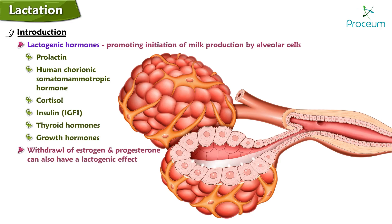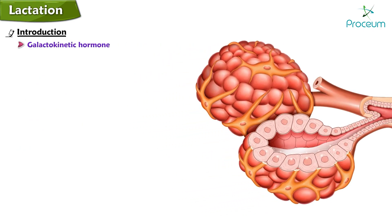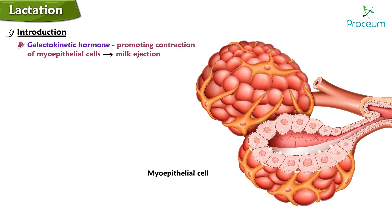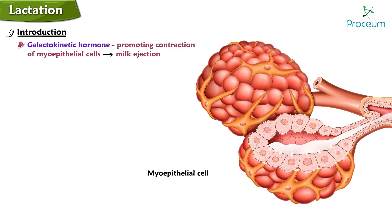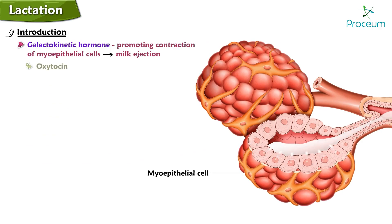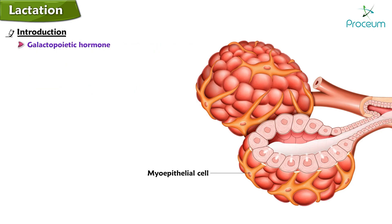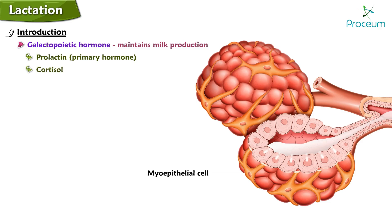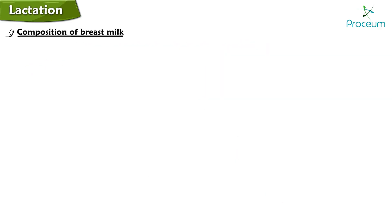Lactogenic hormones include prolactin, human chorionic somatomammotropic hormone, cortisol, insulin, IGF-1, thyroid hormones, and growth hormones. Withdrawal of estrogen and progesterone can also have a lactogenic effect. Galactokinetic hormones promote contraction of myoepithelial cells and thus milk ejection; these include oxytocin and vasopressin, which is 1% to 20% as powerful as oxytocin.